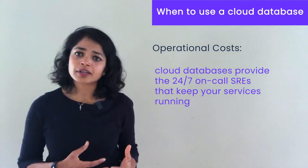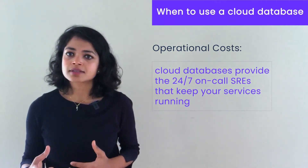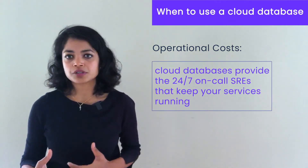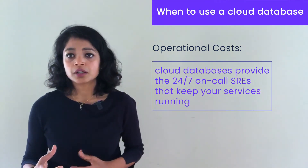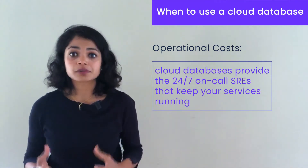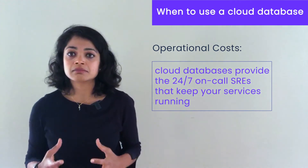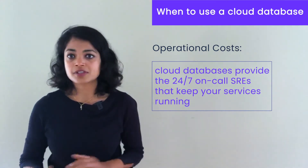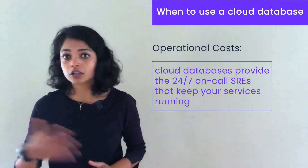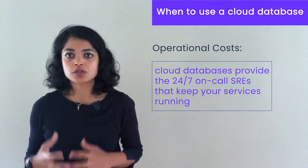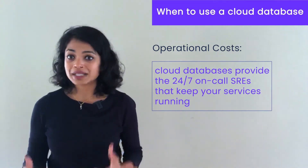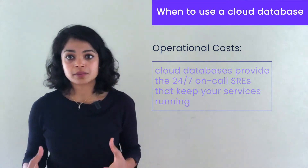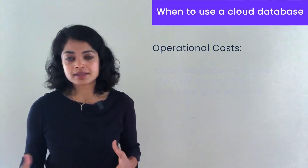The first type of operational cost is human capital costs. This simply means the team of engineers or site reliability engineers who are going to be on call for the service. When you have a production database, you're likely to have somebody on call 24/7 to monitor and maintain it. This is particularly challenging with a complicated piece of software like a distributed database. At Cockroach Labs, for instance, we have a team of SREs on call 24/7 to monitor and maintain our cloud customers' databases.